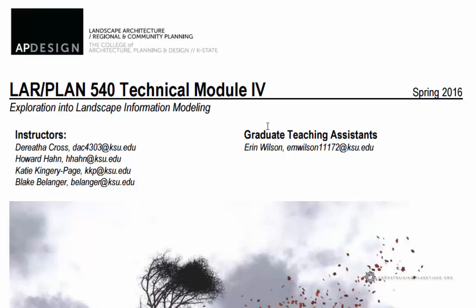Technical Module 4 is going to explore landscape information modeling in a different way. We're going to look at modeling in the fourth dimension. The first dimension can be seen as points; in two dimensions, it's lines; in three dimensions, we're working with polygons, which we did a lot last semester with 3D modeling. So this semester we're going to look at animating things in four dimensions.